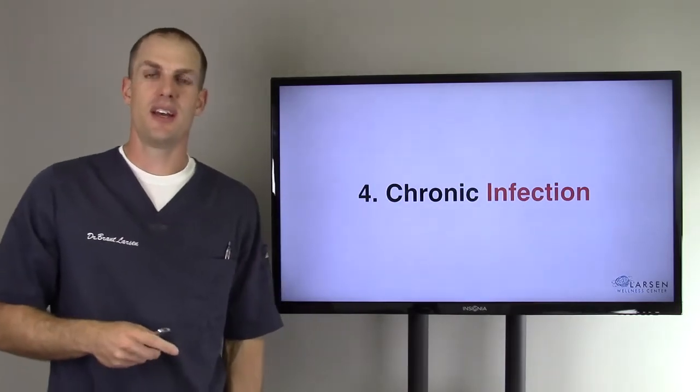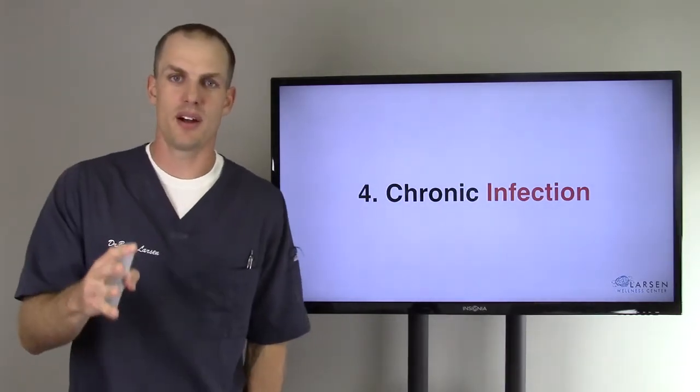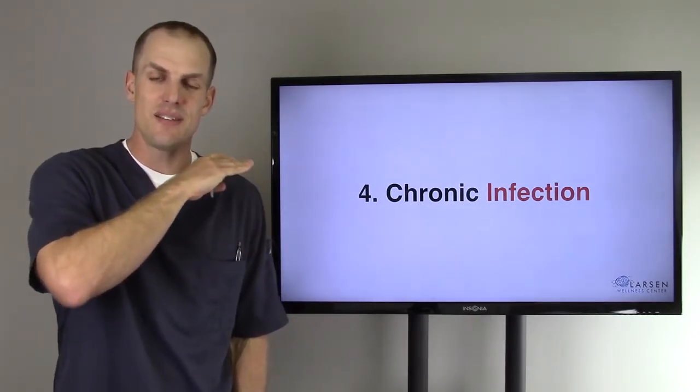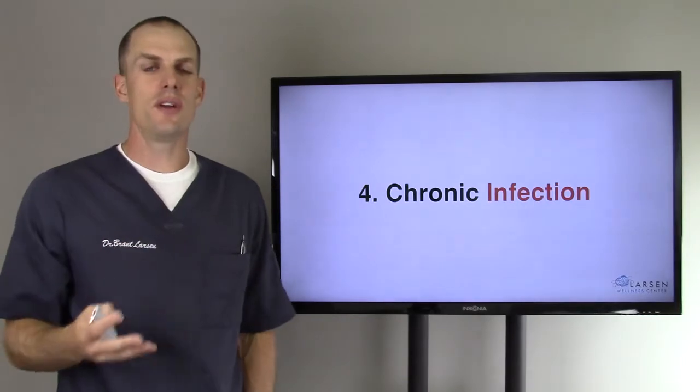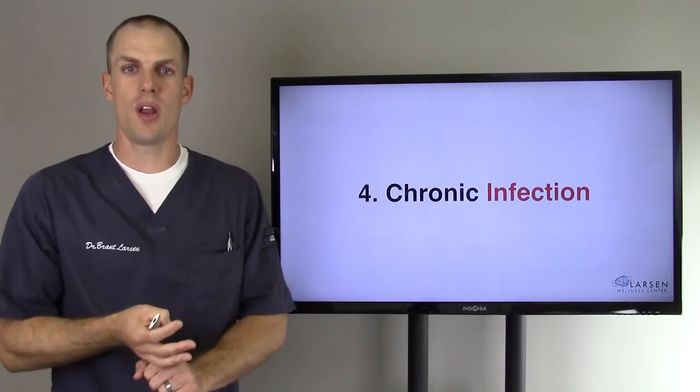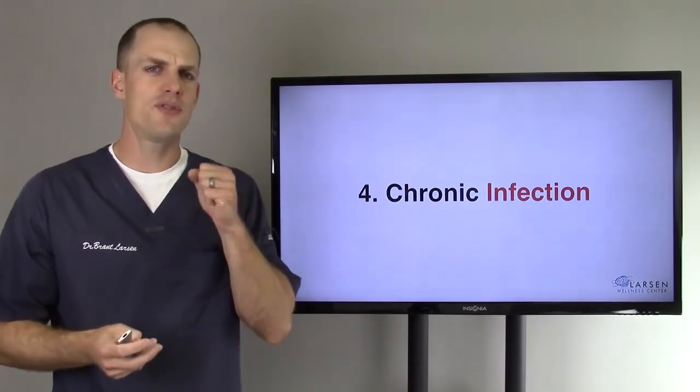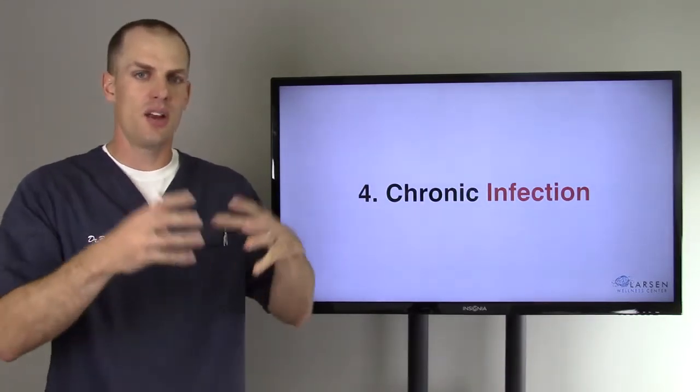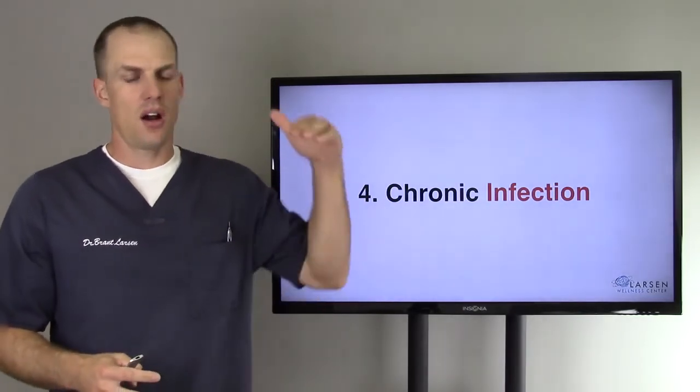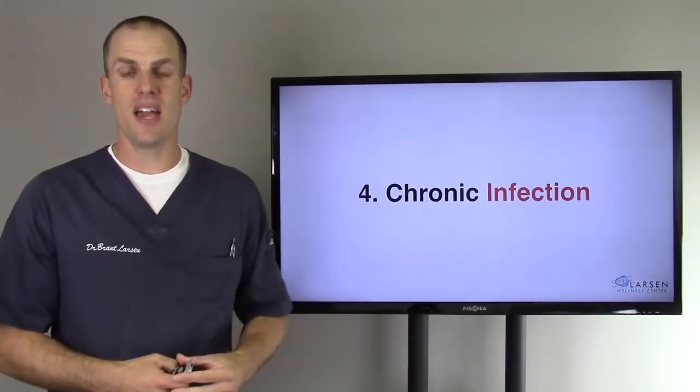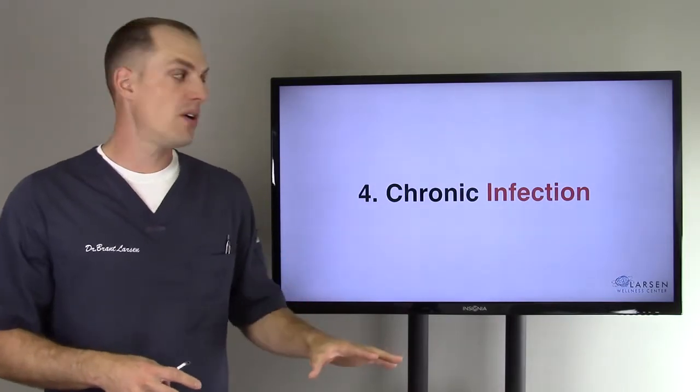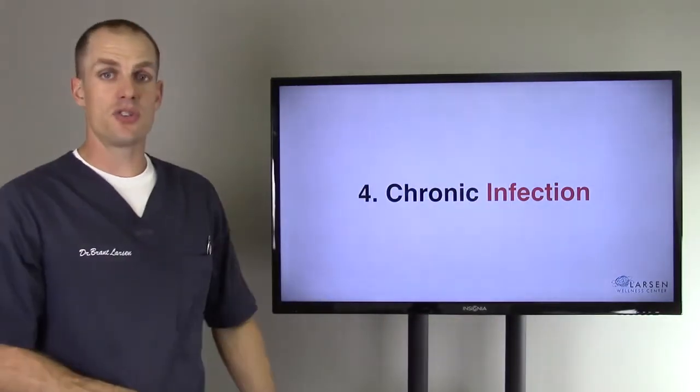Number four, chronic infection. This is rampant in our society. One, because of the lack of acid. If you can't disinfect your food, you're going to be ingesting microbes, parasites, whatever it might be. But if you have strong stomach acid, like a dog, a dog can eat rotten meat and sterilize it. The average American, not so much. Our hydrochloric acid content is tanking in our bodies for various reasons. I'm not going to go into them on this video. But chronic infection is really, really important.